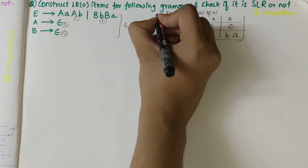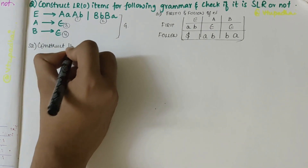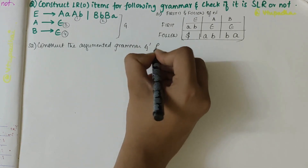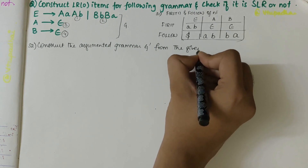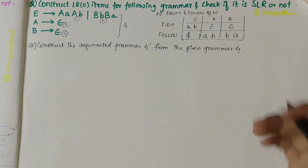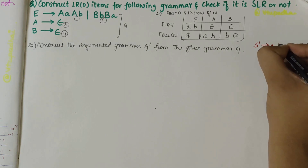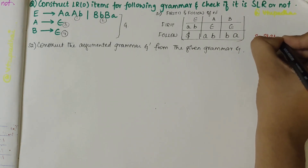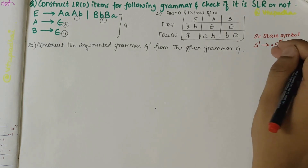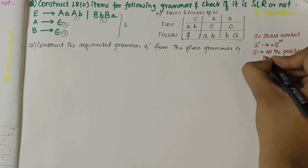Once we have found the first and follow, our next step is to construct the augmented grammar G' from the given grammar G. Before constructing, we need to remember certain rules: if the production is of the form S' → •S where S is the start symbol, then after the dot, if I have any non-terminal, I should write all the possible productions of S with dot as prefix.